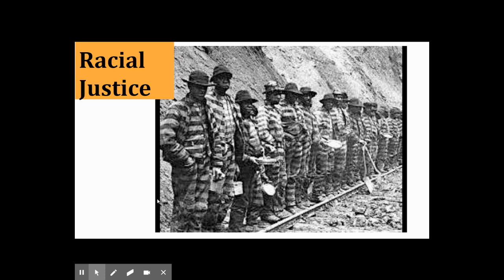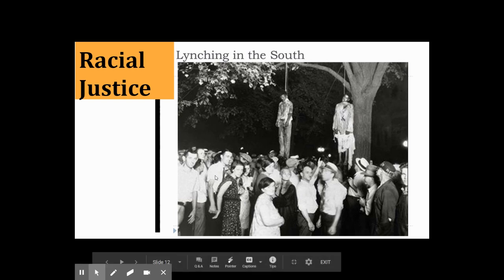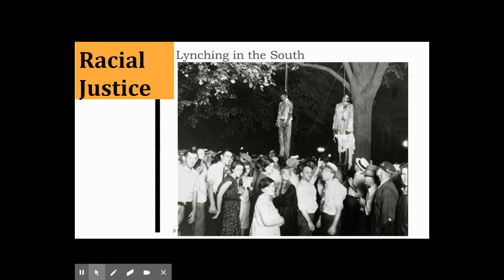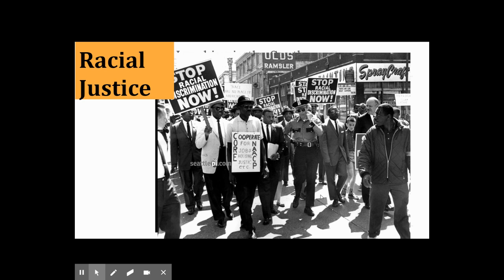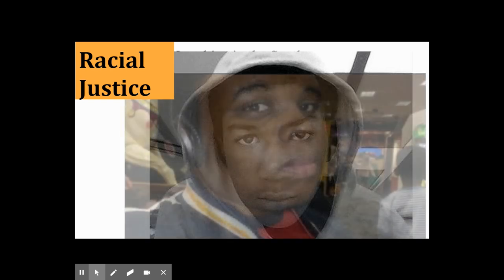Racial justice. Here we have a chain gang of all African American workers after the Civil War. We'll talk about how convict leasing created a new system of slavery in the South that was state-condoned and criminalized much of Black movement. We have lynchings — extrajudicial killings where individuals were held accountable and killed based on mob violence. Seeing this graphic image, it's hard to imagine people hanging around and smiling at what they had accomplished.